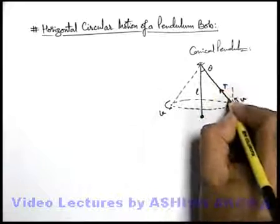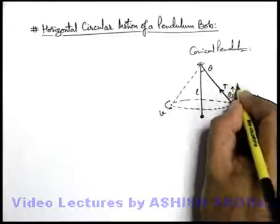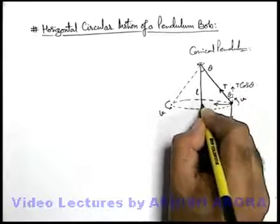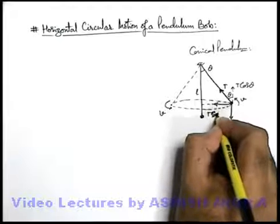In this situation, if we just talk about the components of this string tension, in this situation this will be t cos theta, and along the radial direction inward toward the center it'll be t sine theta.